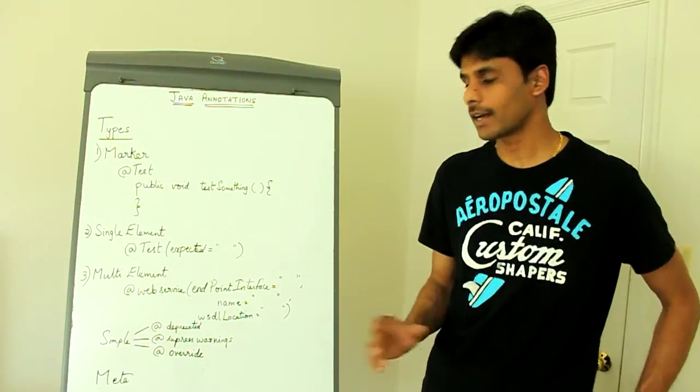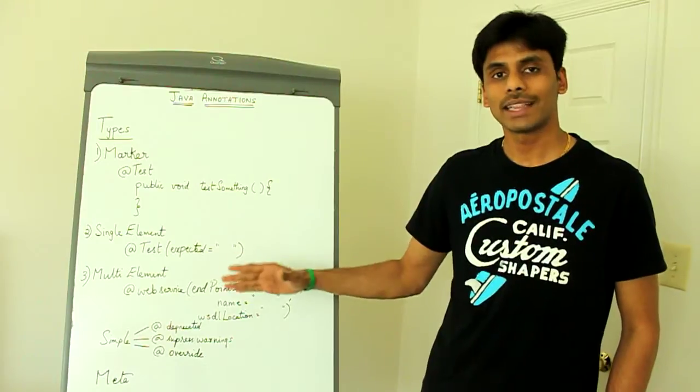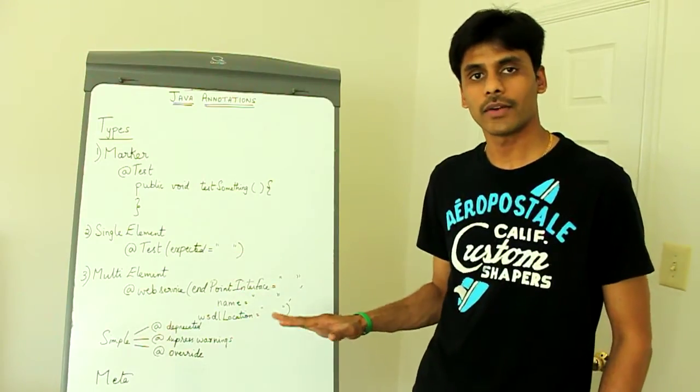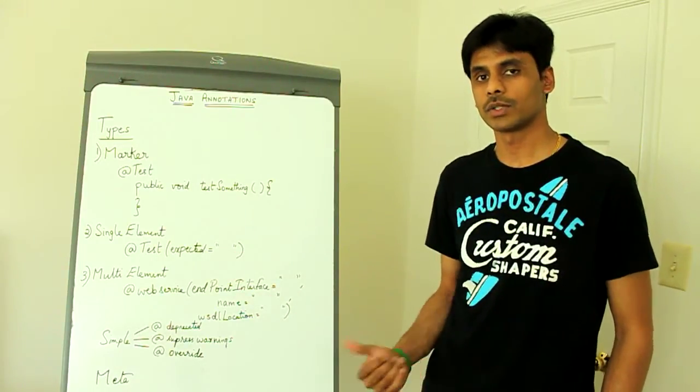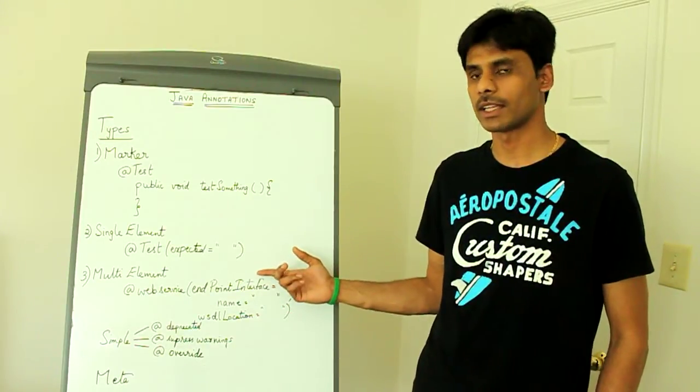So the JUnit framework at runtime looks at the exception you are expecting and if your method doesn't throw that exception at runtime, the method under test, if it doesn't throw the exception at runtime, your JUnit framework will fail that particular test method.